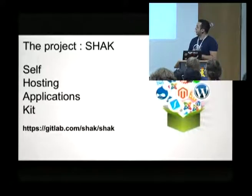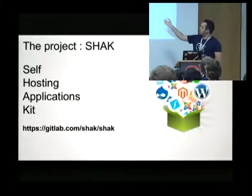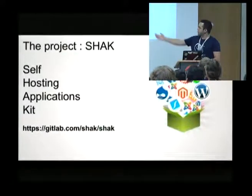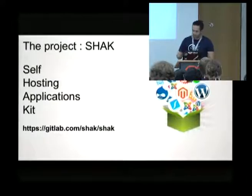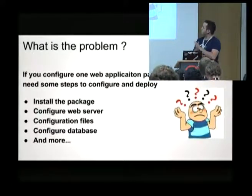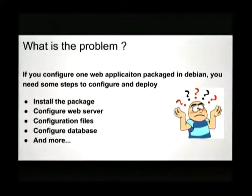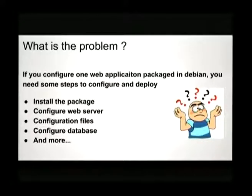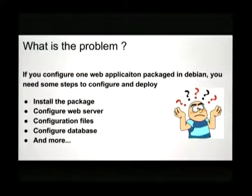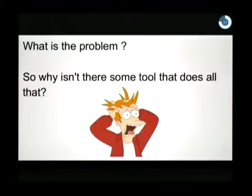The project is Shaq. Shaq is a self-hosting applications kit, available at gitlab.com/shaq/shaq. What is the problem? If you configure a web application package in Debian, you need some steps to configure and deploy: install the package, configure your servers, configure files, configure the database, and more. These tasks are easy for experienced users, but for inexperienced users, maybe not. So why isn't there a tool that does all that?